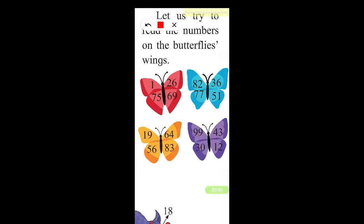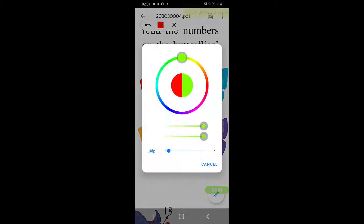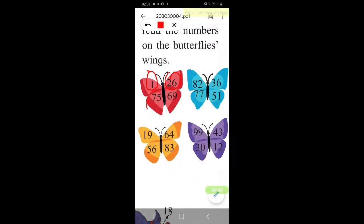Let's try to read the numbers on the butterfly's wings. This is one, twenty-six, seventy-five, sixty-nine.